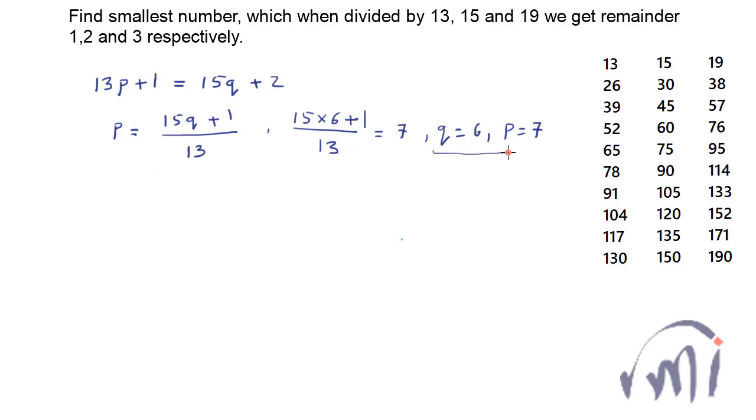So these are the values of p and q and if I substitute this value of q over here, the number which we were talking about will be 15 multiplied by 6 that is 90 plus 2, which is 92. And you will get 92 again when you substitute value of p equal to 7 over here. 13 multiplied by 7 will give you 91 plus 1 will again give you 92. So 92 is actually the smallest number which satisfy this condition.